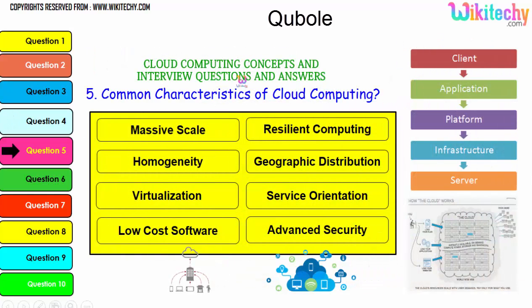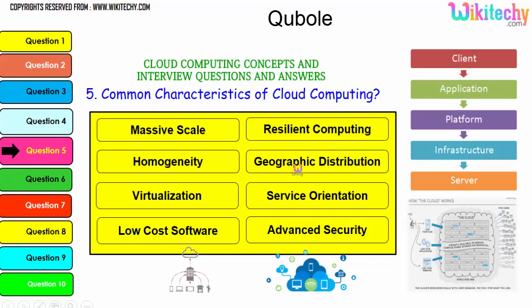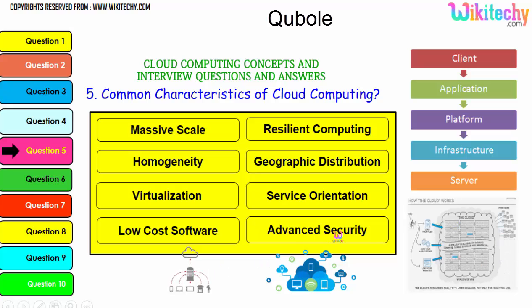The common characteristics of cloud computing are very important. They include: massive scale — as big as you need; homogeneity — uniform resource usage; virtualization — ability to create and use virtual machines; low-cost software; resilient computing — browsing is done remotely without disturbances; geographic distribution — data and computing is geographically distributed; service orientation — purely service-based; and advanced security.